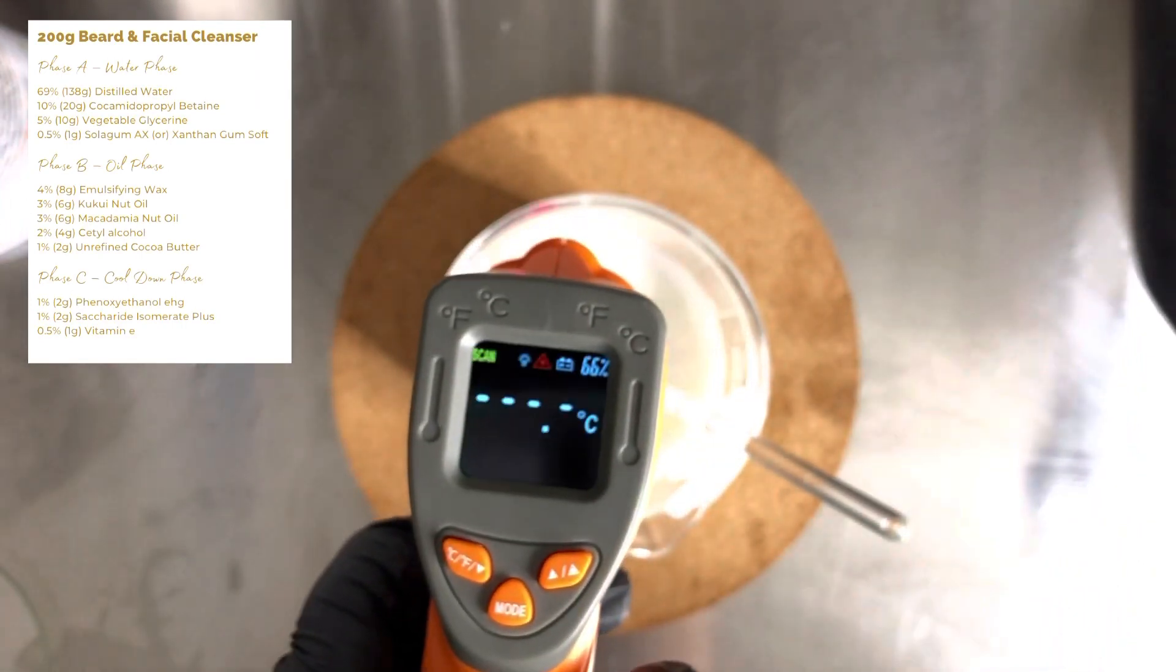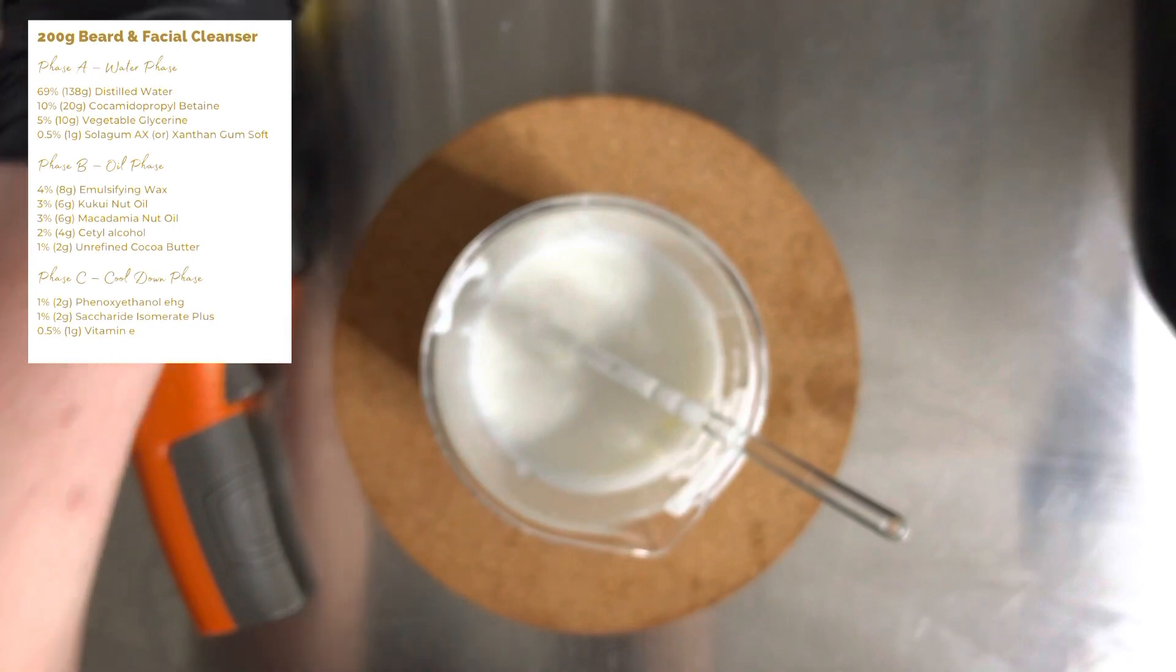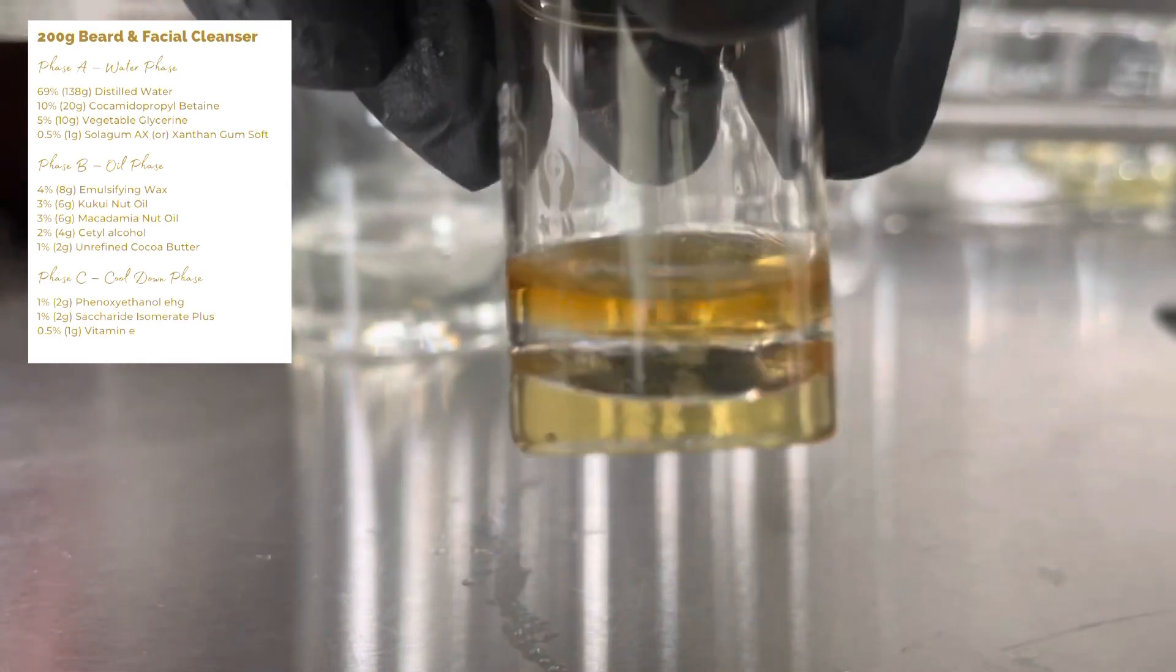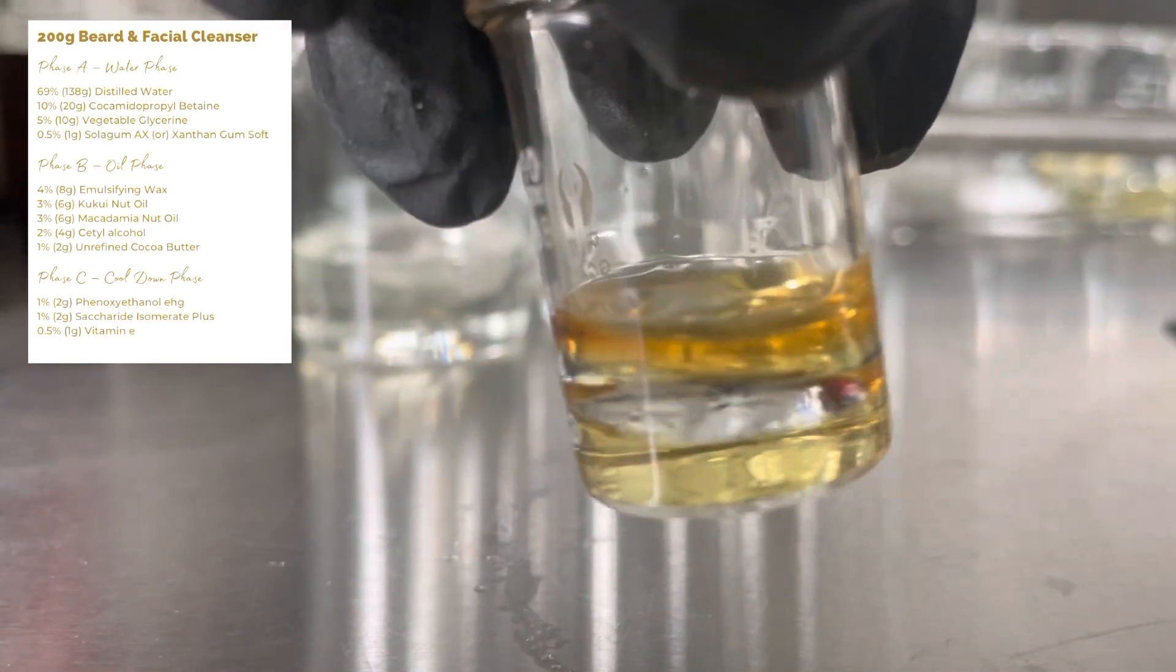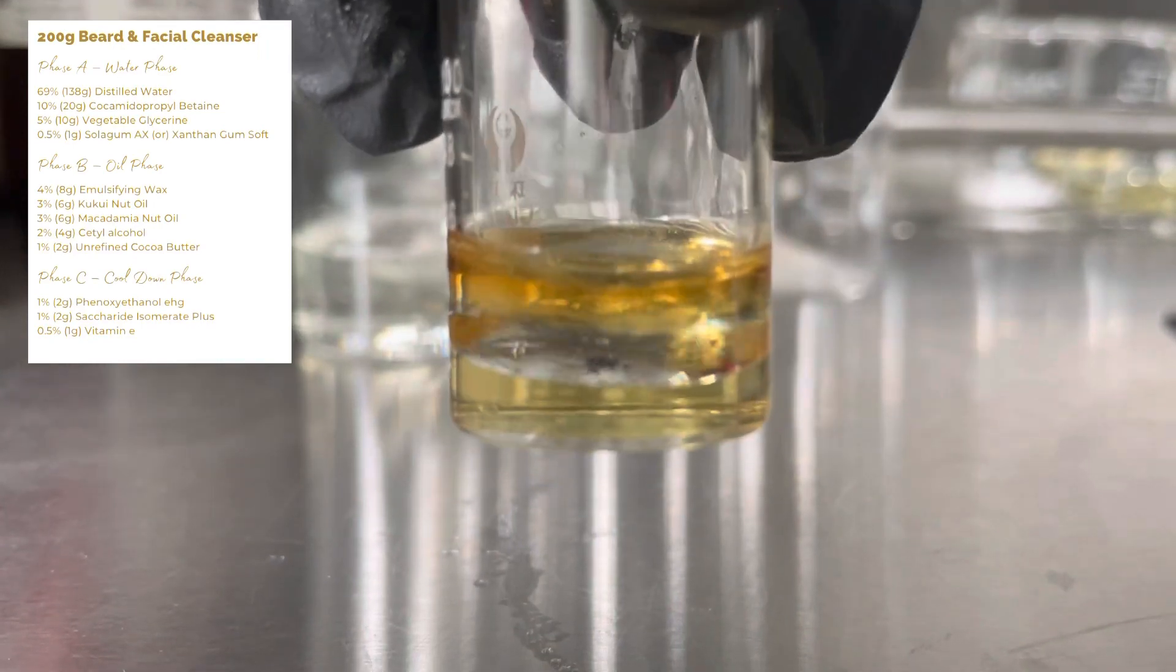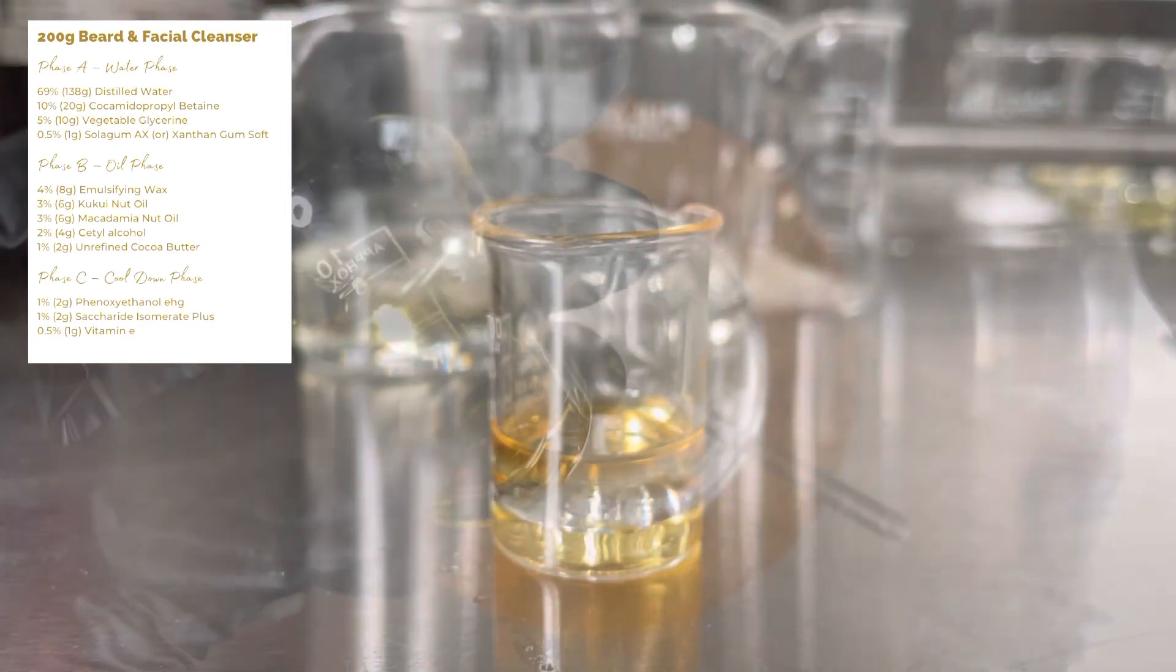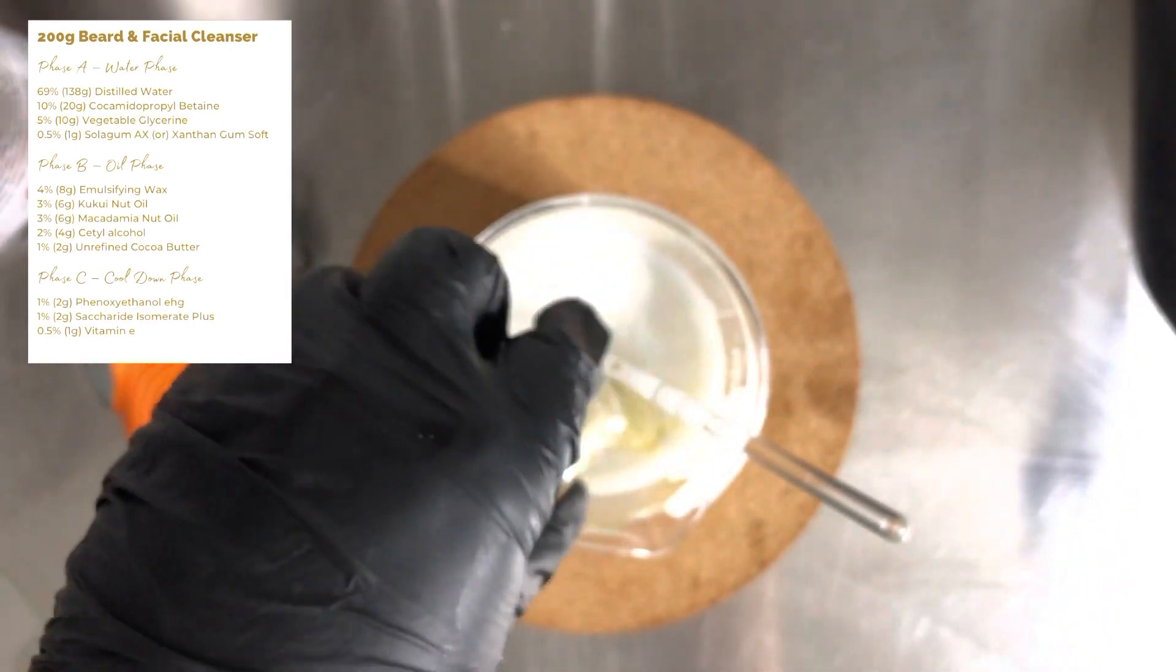Right, so now it's sufficiently cooled down, we can add our cool-down phase. And for the cool-down phase I've obviously chosen a preservative—I'm using phenoxyethanol EHG, this is a broad-spectrum preservative. Then I'm using saccharide isomerate, this is a deep moisturizing active that carries on working even when the product's rinsed off. And vitamin E—this is our antioxidant and it also helps to repair the skin.